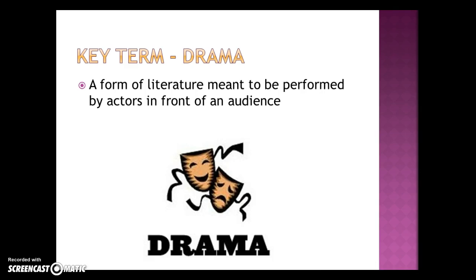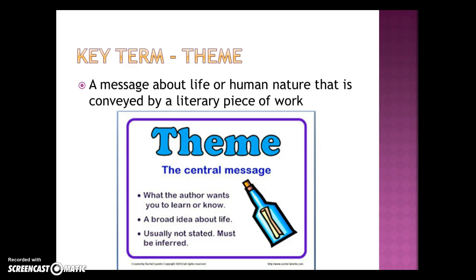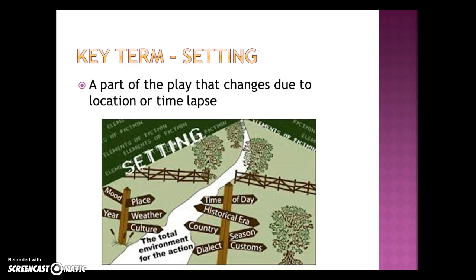Drama is a form of literature that must be performed by actors in front of an audience; we read most of ours in class or listened to them. Theme is the message about life or human nature conveyed by a literary work — it's the central message, the heart of the story. Setting is the part of the play that changes due to a location or time lapse; when the setting changes, usually the scene will change.